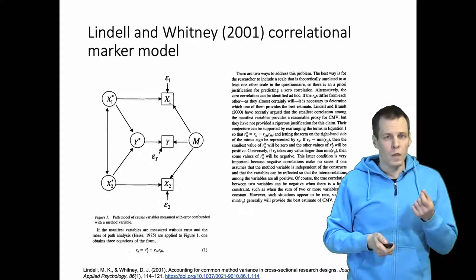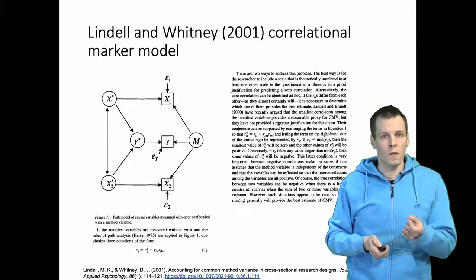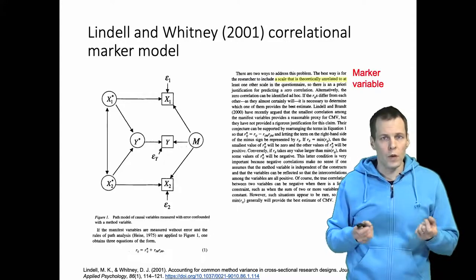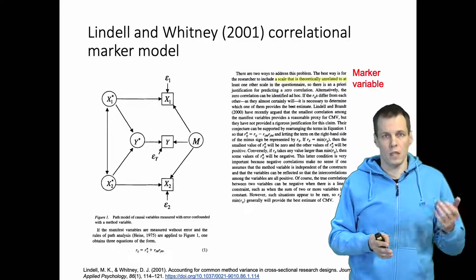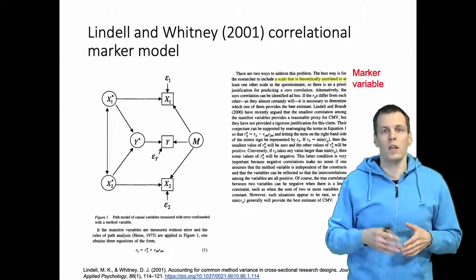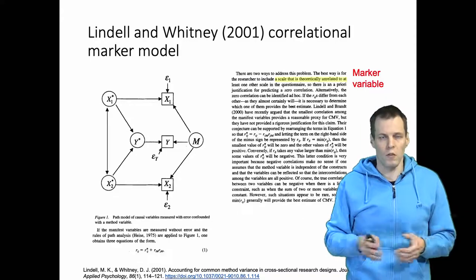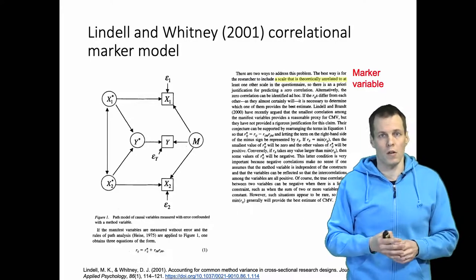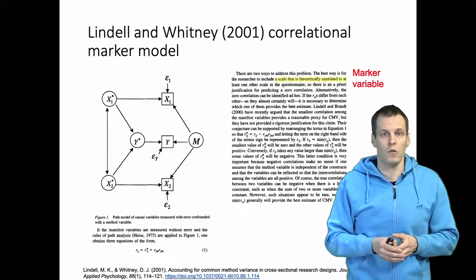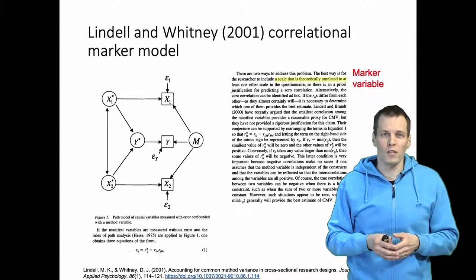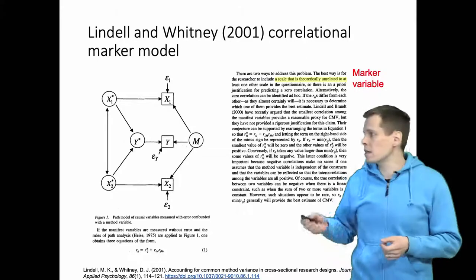If we can find a construct that is unrelated to the key constructs in our study, then we would call the measures of that construct marker variables. For example, something people have been using is whether the person likes jazz music or not. When you measure firm performance and firm innovativeness using a five-point agreement scale, measuring whether the person likes jazz music on the same scale format could be used as a marker — assuming of course that the marker is affected by the same kinds of biases as the actual variables.